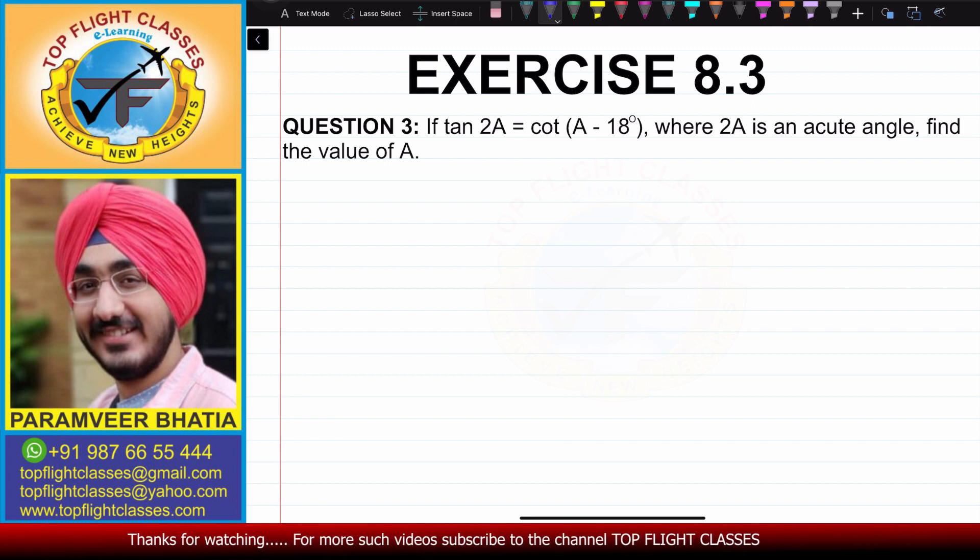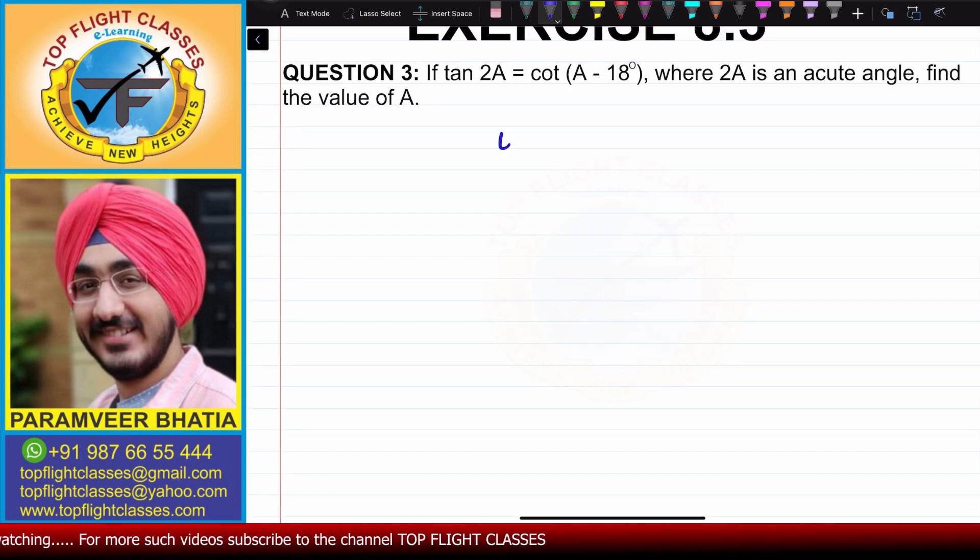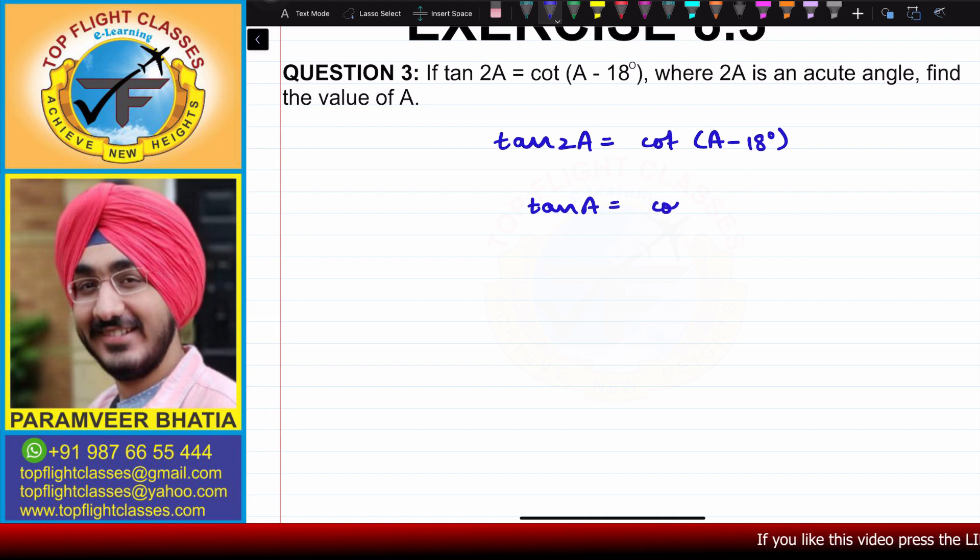To solve this question, we have an equation given in tan and cot. That is, tan 2A equals cot (A - 18°). Now, tan and cot are complementary, so we know that tan A is equal to cot (90° - A).